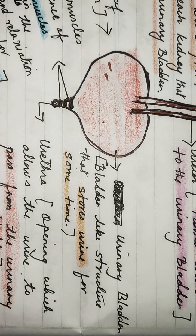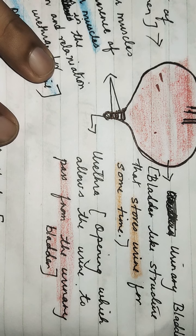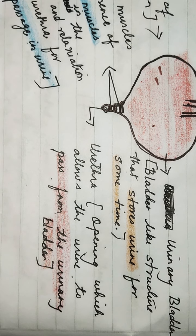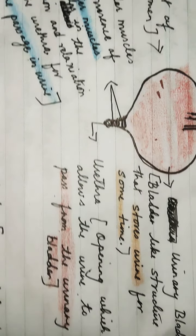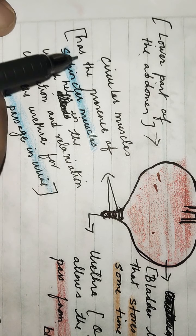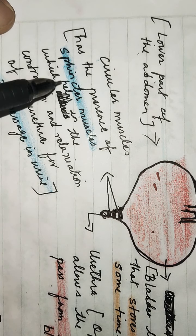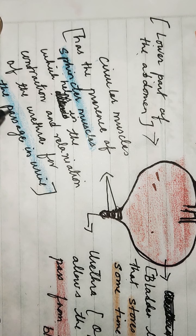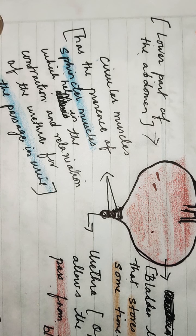After the urinary bladder, whenever you are urged to answer the call of nature, there is a passage — that is known as the urethra — and it is the opening which allows the urine to pass from the urinary bladder. You can see the circular muscles here; the urethra has the presence of sphincter muscles which help in the contraction and relaxation of the urethra for the passage of urine.